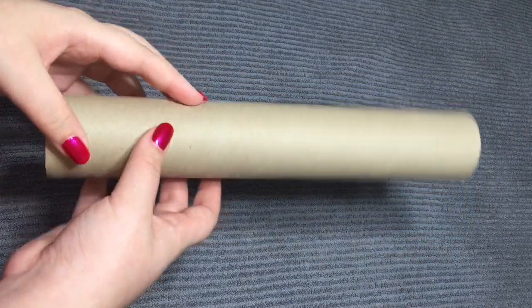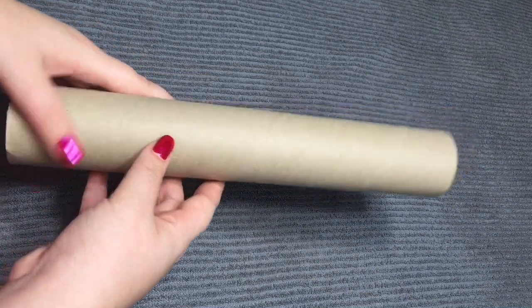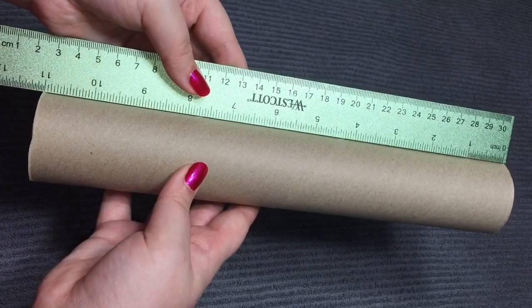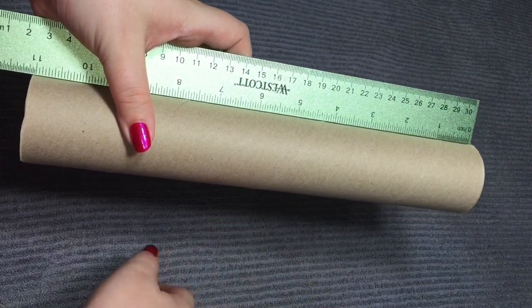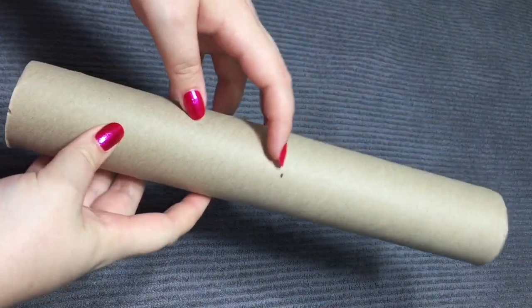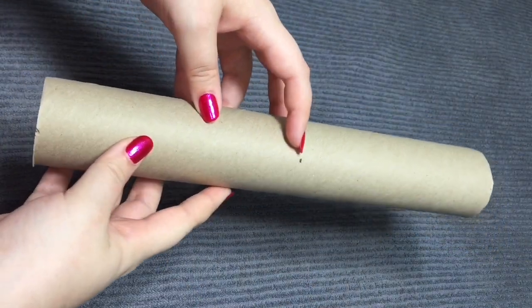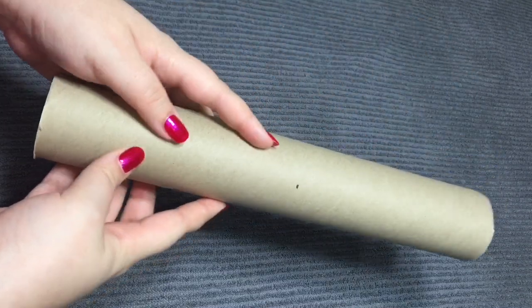You're going to need a paper towel roll or a toilet paper roll. I wanted my candles to be a little smaller than the paper towel roll, so I cut mine in half. Plus I only had two rolls and I wanted at least four candles, so that's why I cut it in half to make more candles.